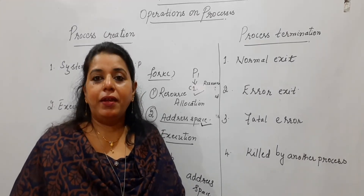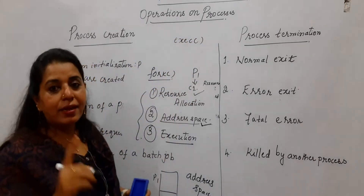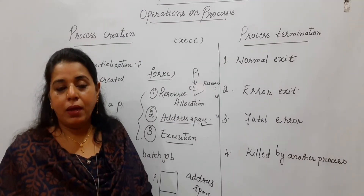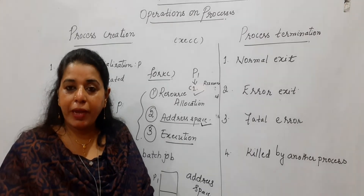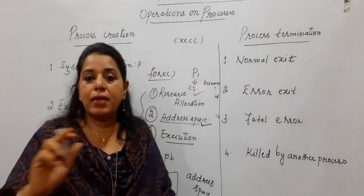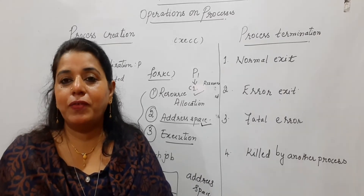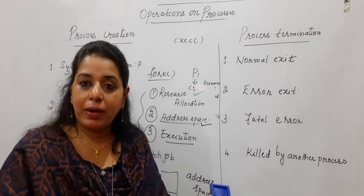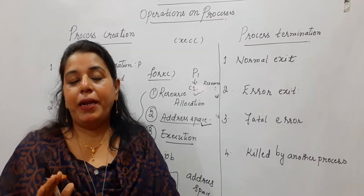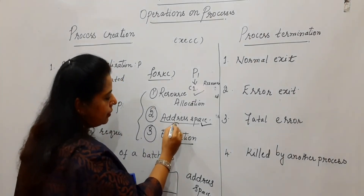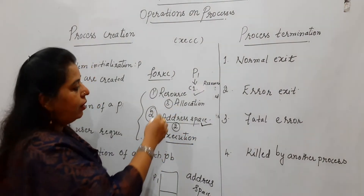There is a slight deviation regarding address space. There is another system call called EXEC. EXEC will load the child process with a new program. Initially, the child has the same program as the parent. But when EXEC is used, whatever was in the child process gets replaced with a new program. So there are two possibilities: the child shares the parent's address space, or when a new program is loaded via EXEC, a separate address space is allocated to the child.